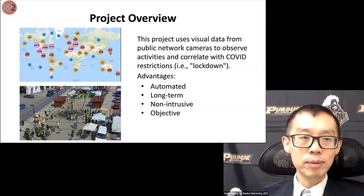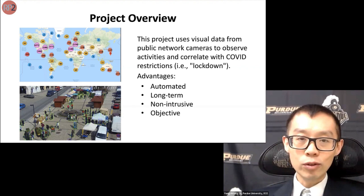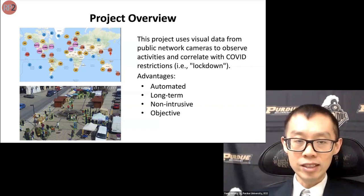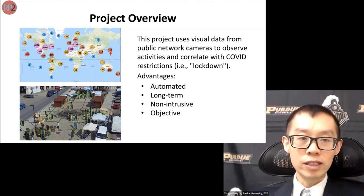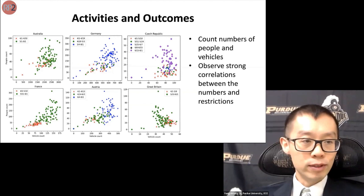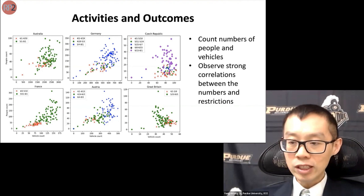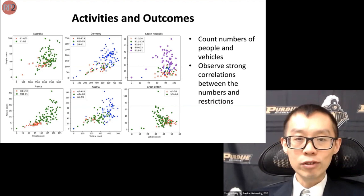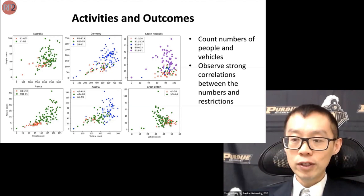There are several reasons to use network cameras. First, the process is fully automated — data is already captured automatically without needing anyone to travel and record. Second, the method can observe activities over a long period; we captured data every day for almost a year starting March 2020. Third, this approach is totally non-intrusive — we are not disturbing anybody. The horizontal axis in our summary slide shows the number of vehicles counted over time on different dates, the vertical axis shows the number of people counted, and different colors represent different policy restriction levels.